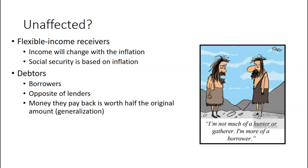Who is unaffected? Flexible income receivers — their income adjusts to inflation levels. For instance, people on Social Security, which is updated based on the official inflation rate each year. Who else is unaffected or even helped? Borrowers — for the same reason lenders are hurt. With unanticipated inflation, borrowers pay back money with fewer real dollars. When they borrow $500 and pay back $750, what they pay back with can't buy as much. Based on the Fisher equation, they're paying back lower real interest rates than they should have.